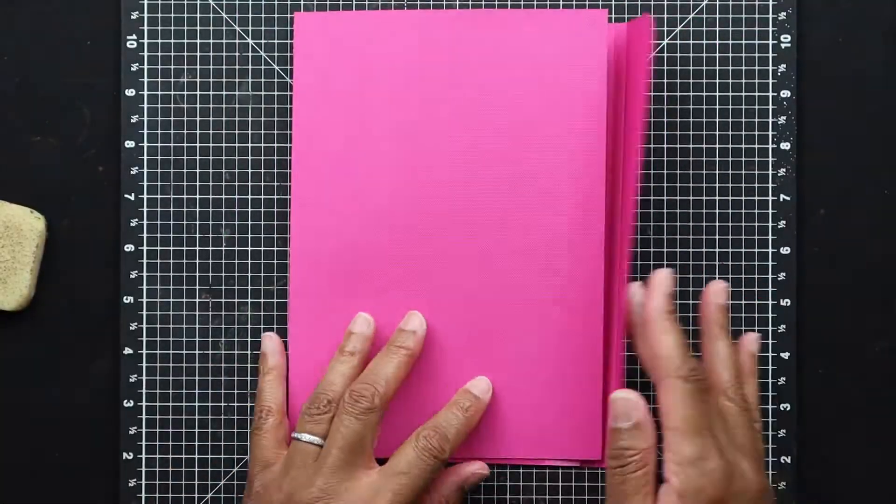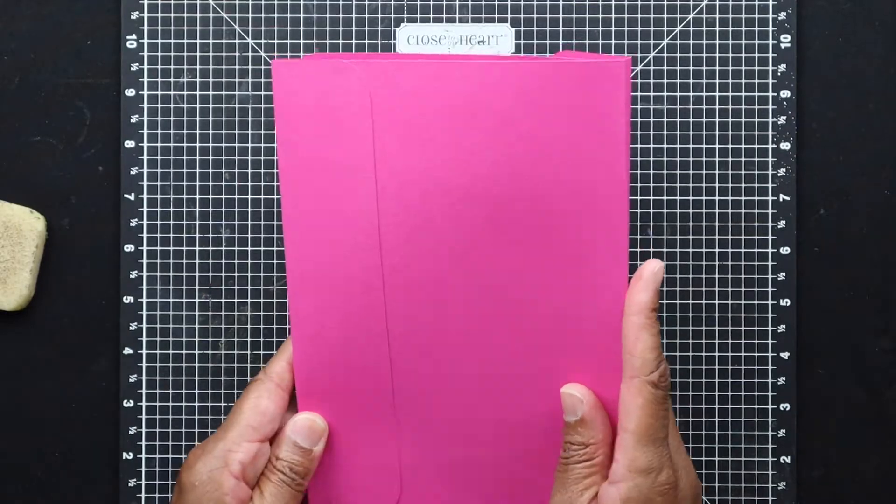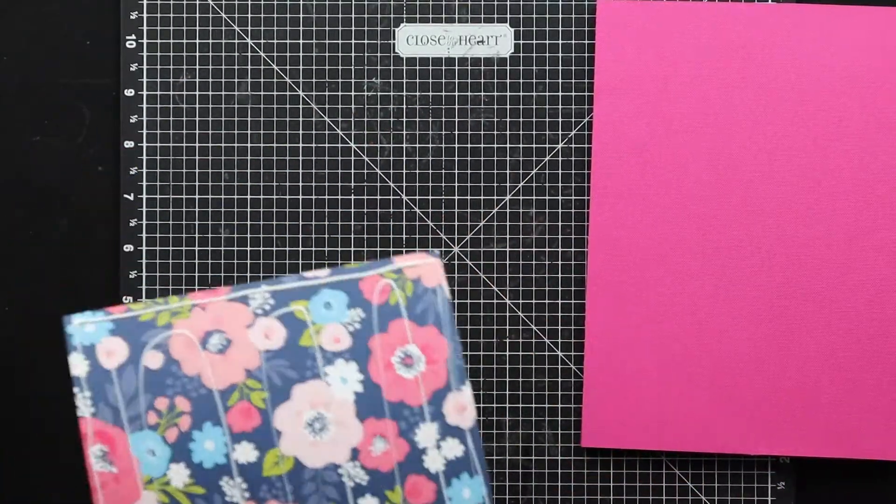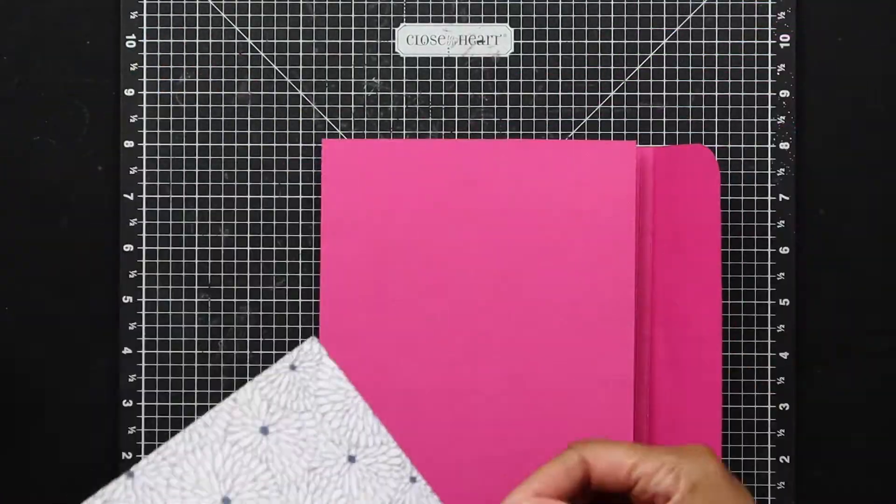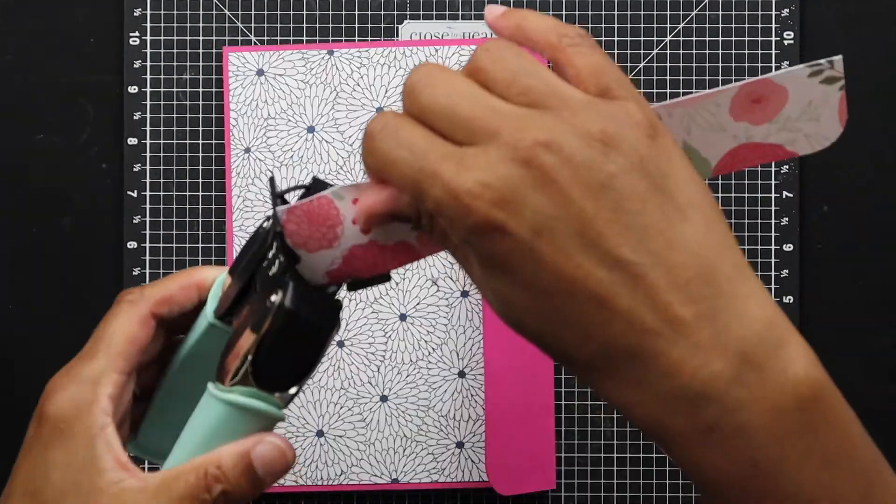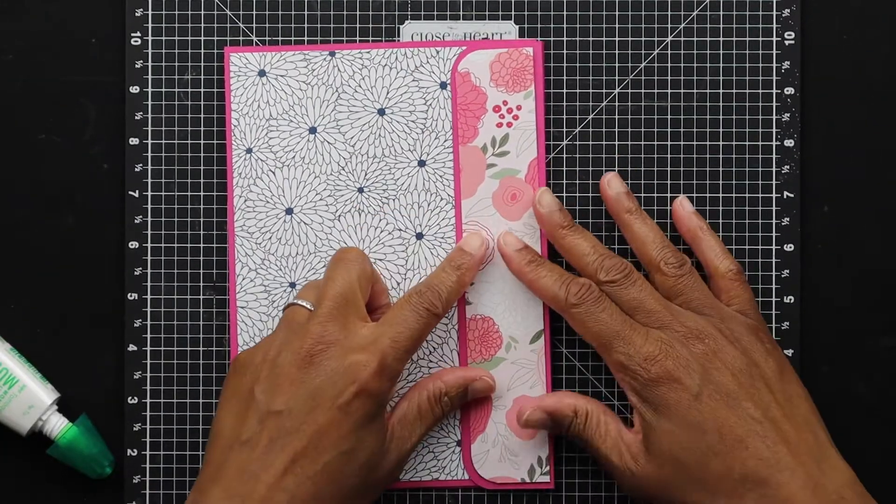Now it's time to decorate it. And again, because this is something that I think would be handled quite often, I'm just using liquid glue to put all of these panels down.